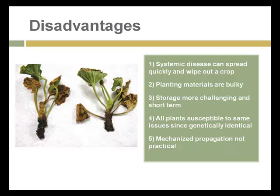Programs are underway to try to develop new strains of bananas that are resistant to this fungus. In addition to diseases, the planting materials — cuttings and other plant parts — are much more bulky and difficult to store and manage than seeds. It's also more difficult to plant or transplant these cuttings and more difficult to mechanize the planting process than it is to simply plant seeds. There are pros and cons to using propagules developed through asexual methods.